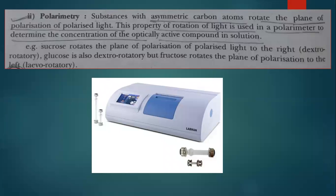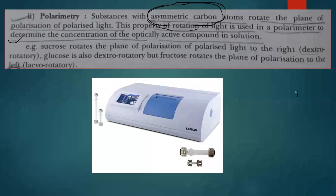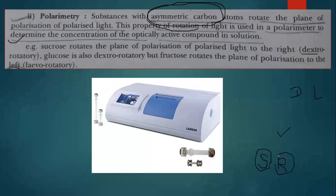By the polarimeter, you will come to know whether there is a presence of an asymmetric carbon atom. However, it will not give you information regarding capital D and capital L — that is a different nomenclature. It will only tell you about the asymmetric carbon atom, but it cannot tell you whether it is S or R — that is a different thing altogether.